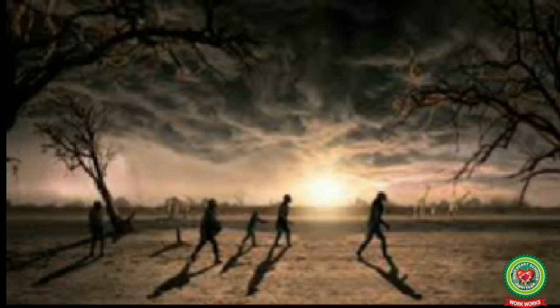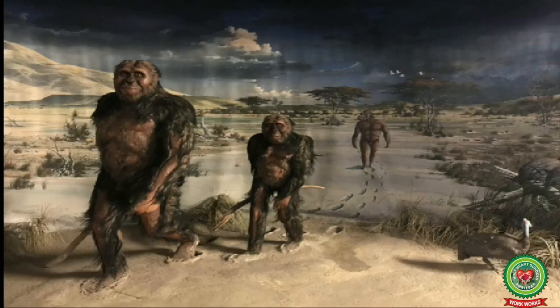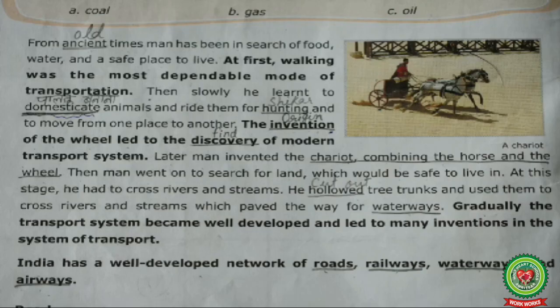These lines mean that from ancient times, men wanted food, water and shelter - a safe place to live. For that, he used to move from one place to another by walking, as no means of transport was developed at that time. So men used to walk in search of basic needs like food, water and shelter.